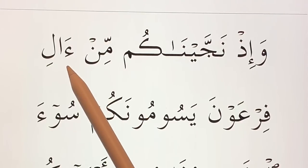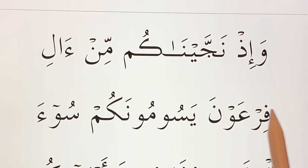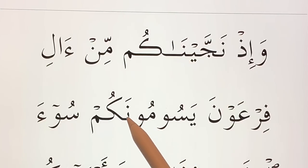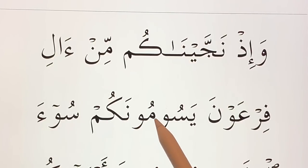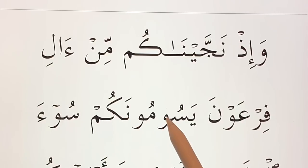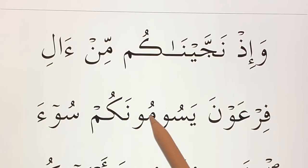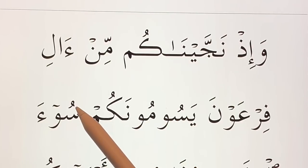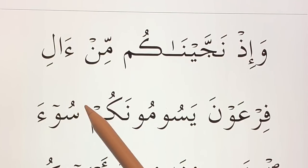مِنْ آلِ فِرْعَوْنَ يَسُومُونَكُمْ — So the waw with sukun is extending those letters. يَسُومُونَكُمْ سُو... This is a mad.